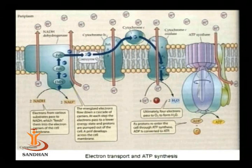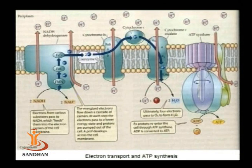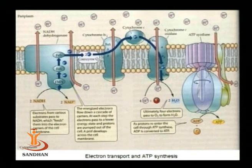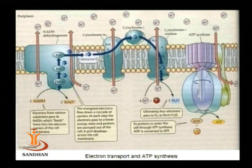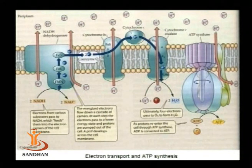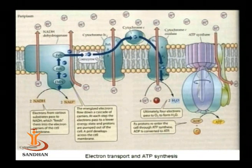Complex II is the succinate dehydrogenase complex. Succinate is converted to fumarate, and succinate donates electrons to flavoprotein, which directly passes them to coenzyme Q, bypassing the steps carried out in Complex I. Finally, coenzyme Q is reduced.